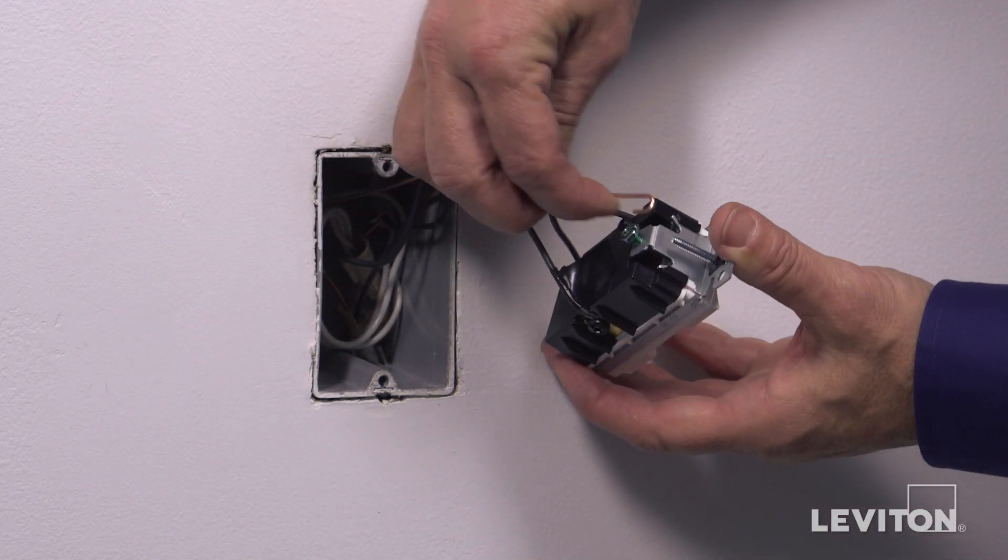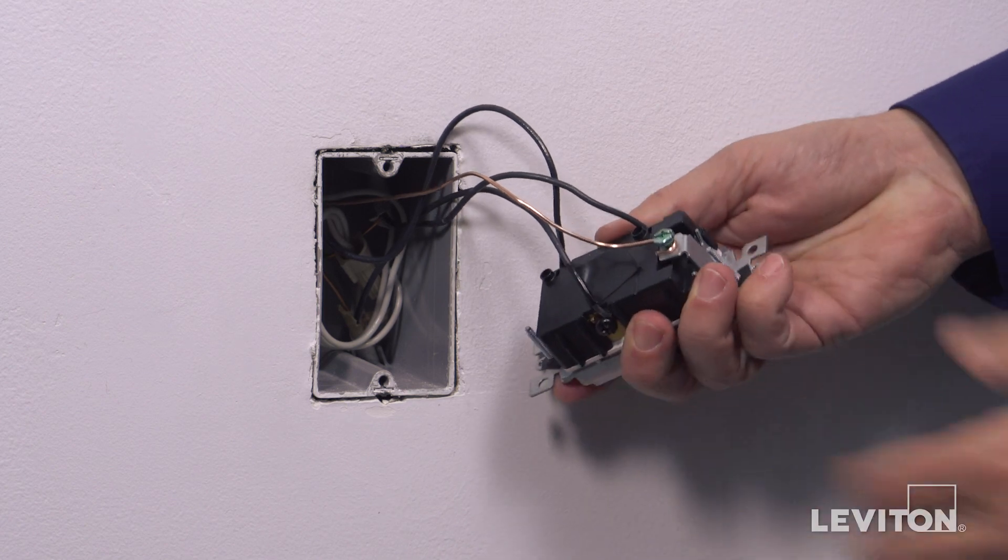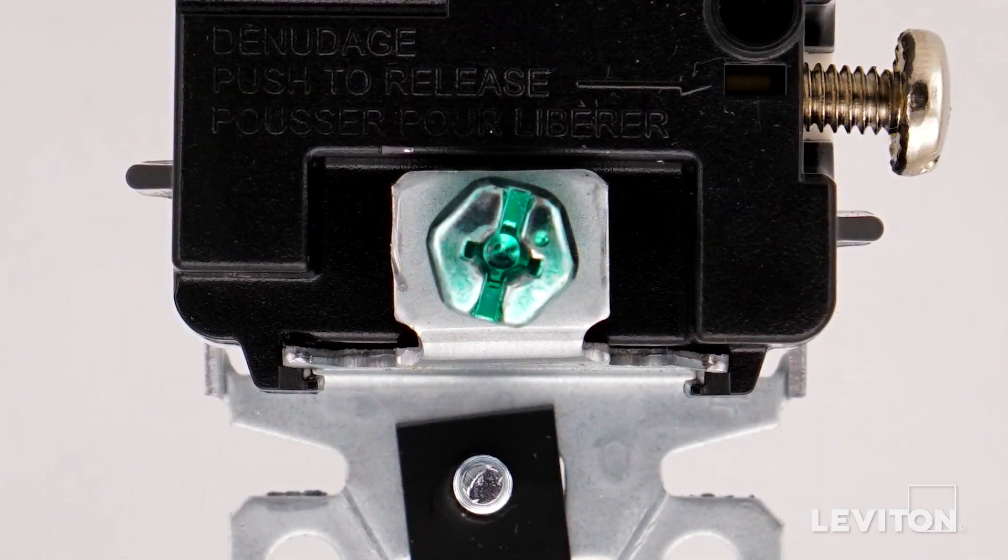Loop the ground wire clockwise three-quarters of a turn around the green screw. Tighten firmly.